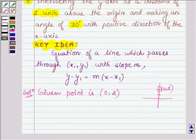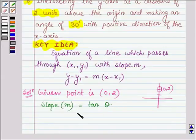And the slope, let us denote it by m, is given by tangent of theta, where theta is the angle made by the line with the positive direction of the x-axis, and that is 30 degrees. So, we have tan 30° = 1/√3.